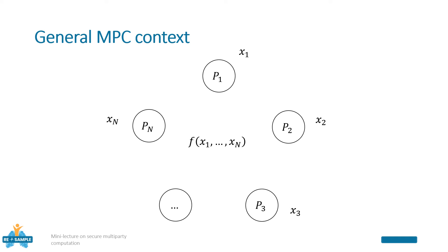In other words, the information leaked is the same as the information that would be leaked if a trusted third party is used to compute the function, as in the Steve example we saw before.